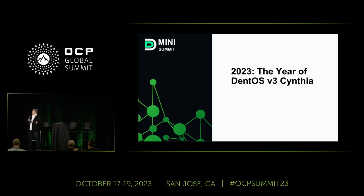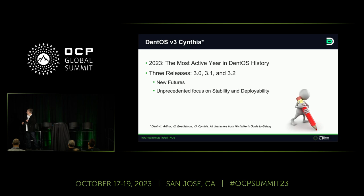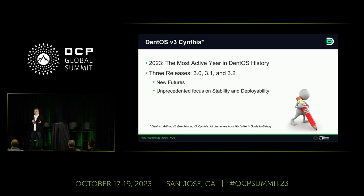We called it the 2023. This year is a turning point for Dant. The release is called Cynthia. Does anybody know why we are using the code name Cynthia? The first one was Arthur, the second one was Bibblebox, the third one is Cynthia. These are all coming from the Hitchhiker's Guide to the Galaxy, the characters from the book. We really do like the book.